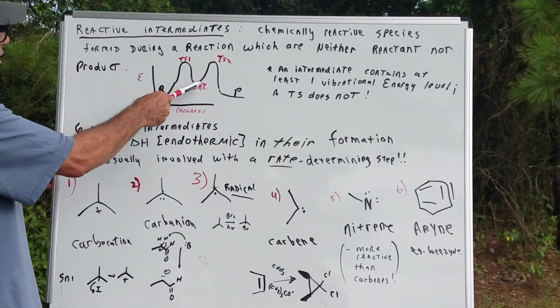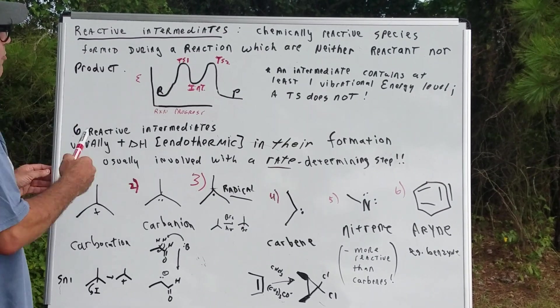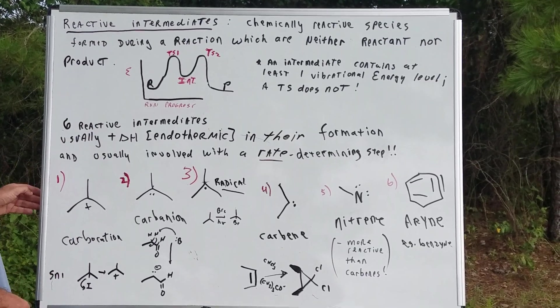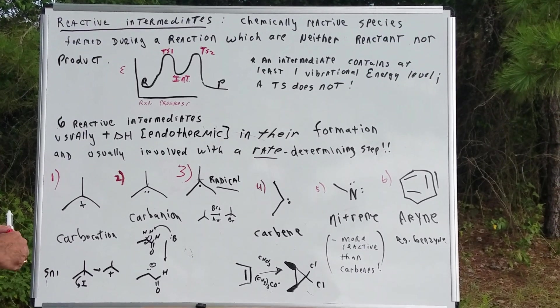Notice this first energy barrier, you call it a hump if you want, represents transition state one. The second hump represents transition state number two. And in here is the intermediate.